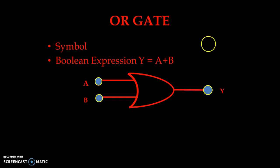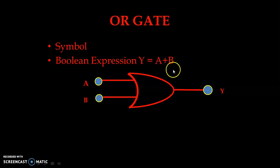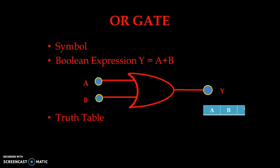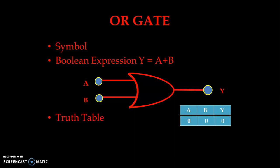After the symbol we have the boolean expression for the OR gate: Y is equal to A plus B. Here we use the plus operator to indicate the OR gate. Then we have the truth table — again we have two inputs so four possible input conditions. Let us take them one by one: A, B, and Y as output. The first condition is 0,0, so output is 0 — if both the inputs are at low condition then we have low output.